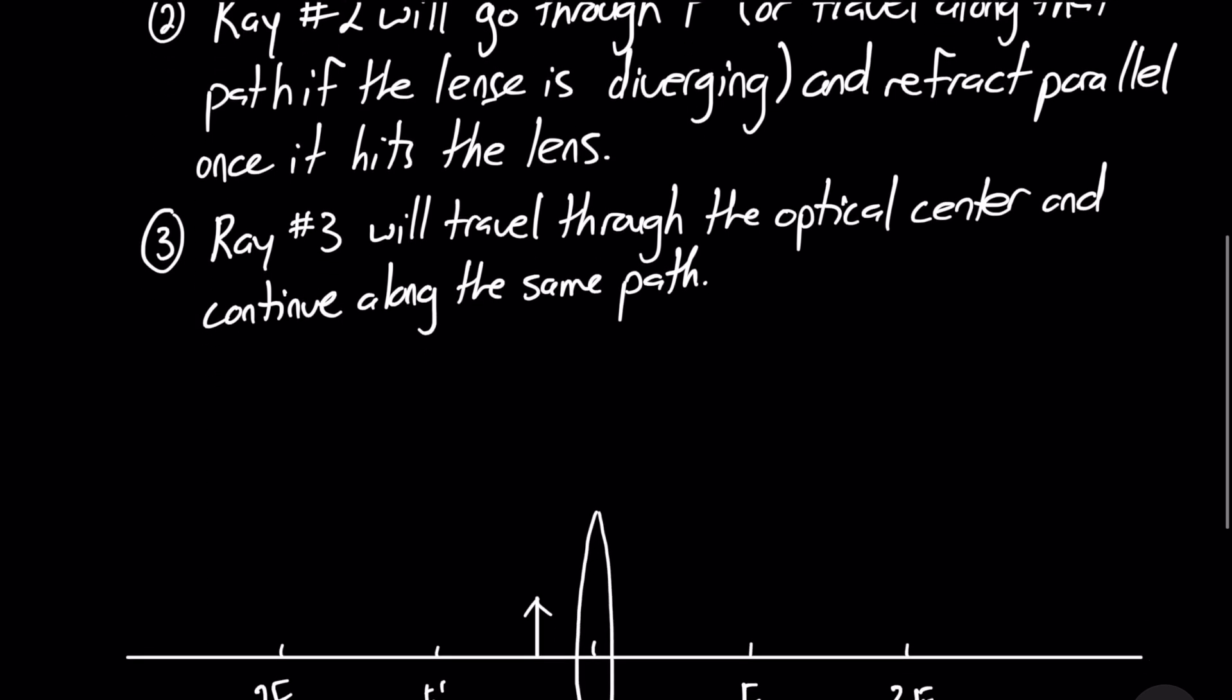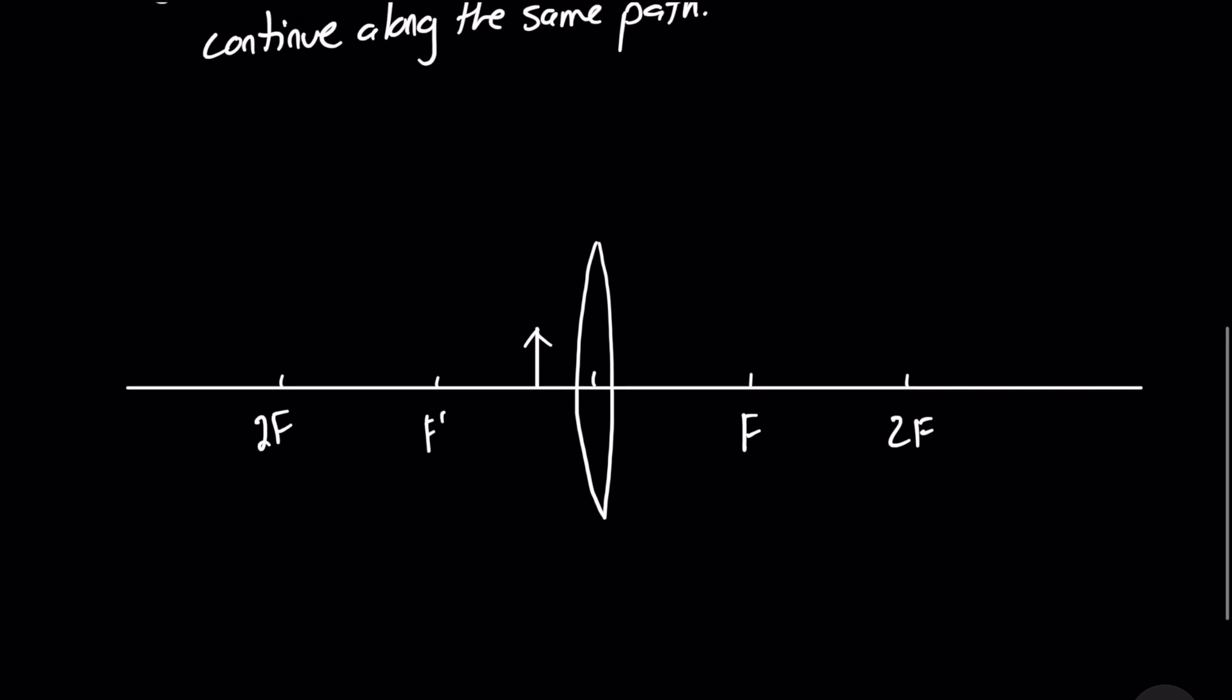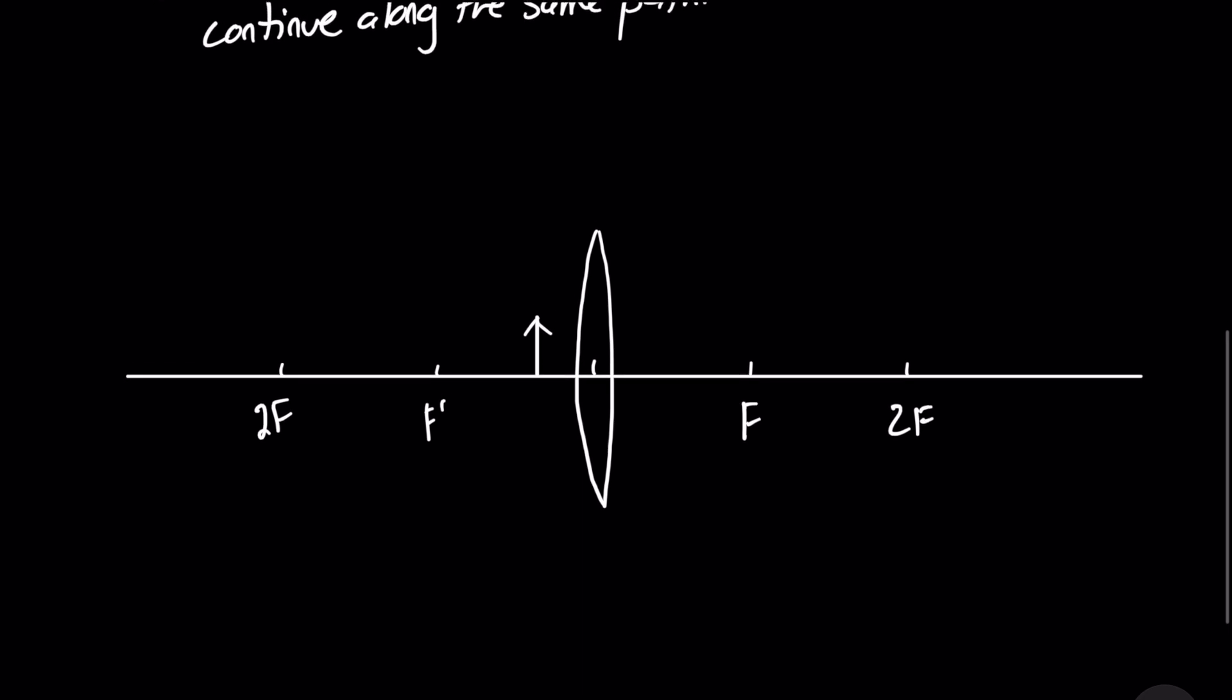So in a previous video that I was mentioning before, I talked about ray diagrams for both converging and diverging lenses, but I did not discuss a ray diagram when our object here is in front of our secondary focal length for a converging lens.